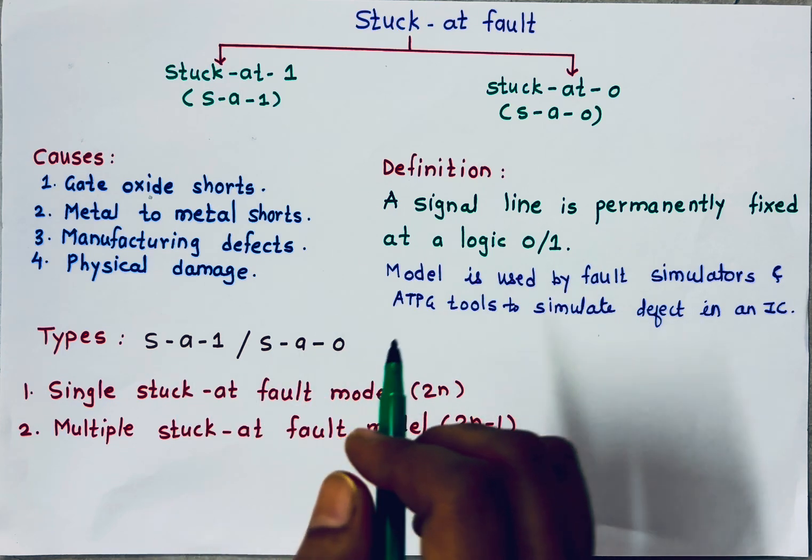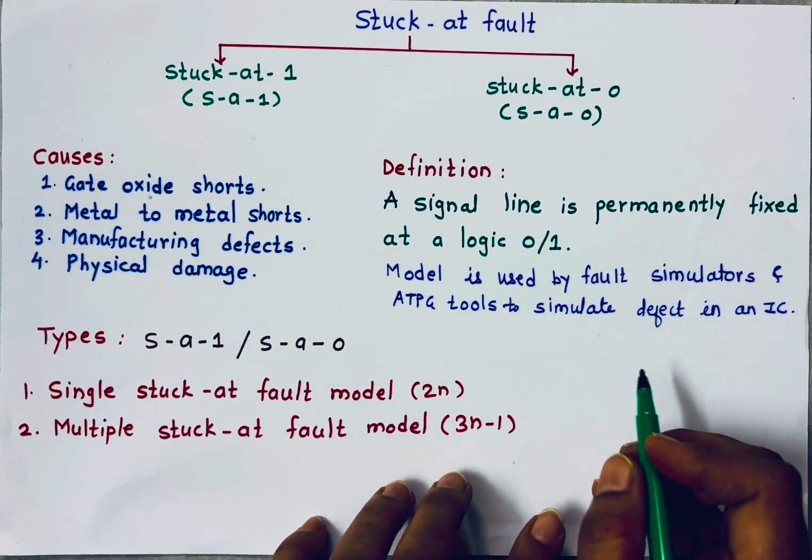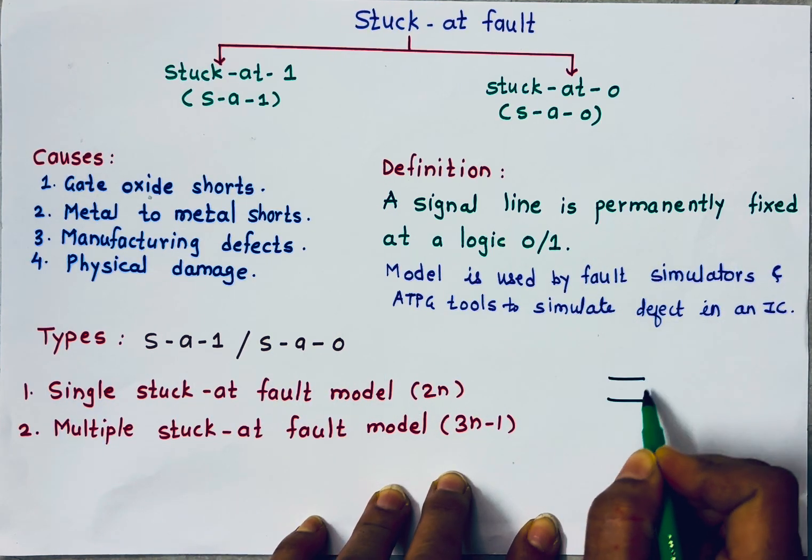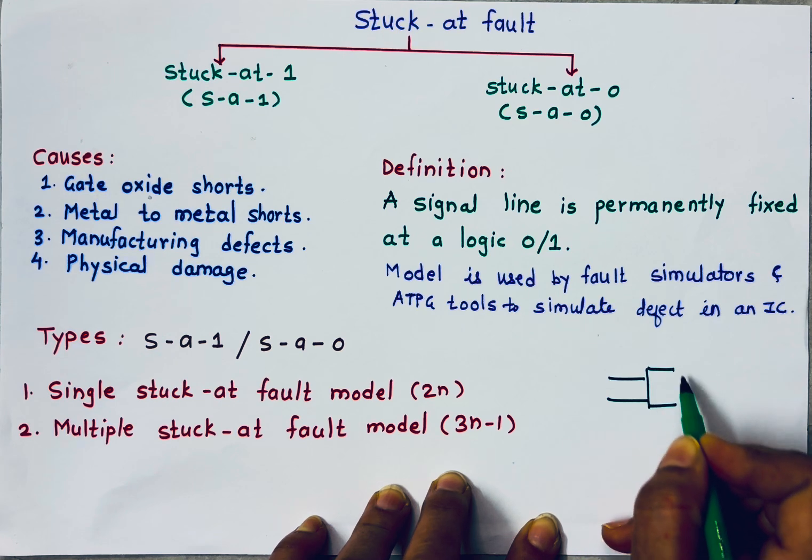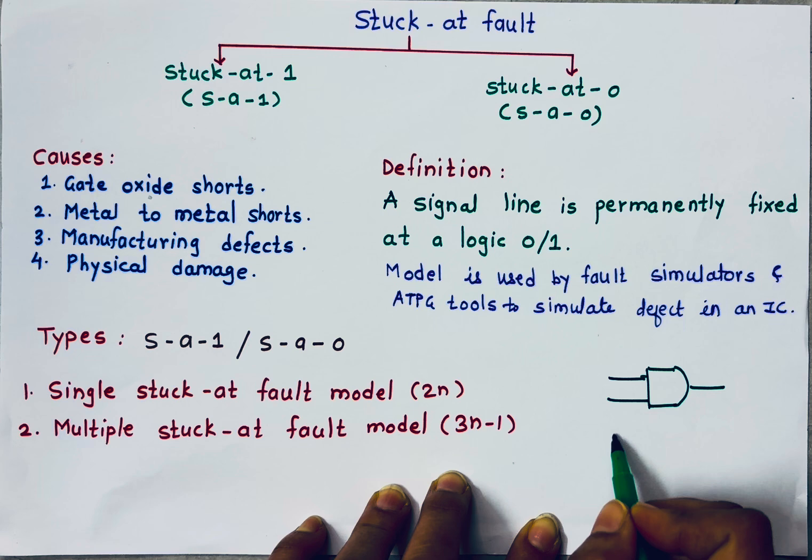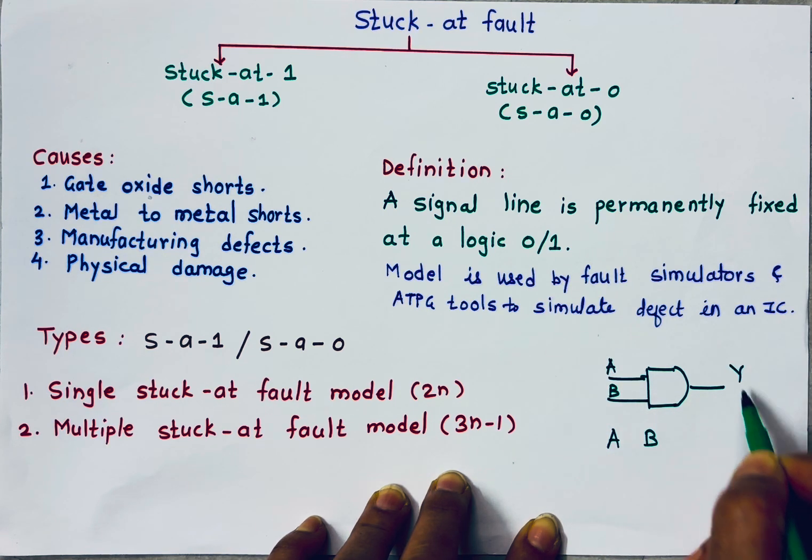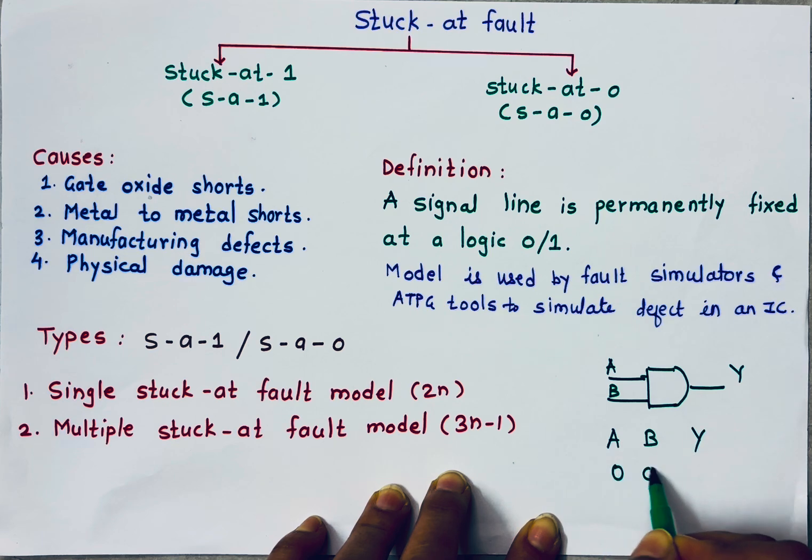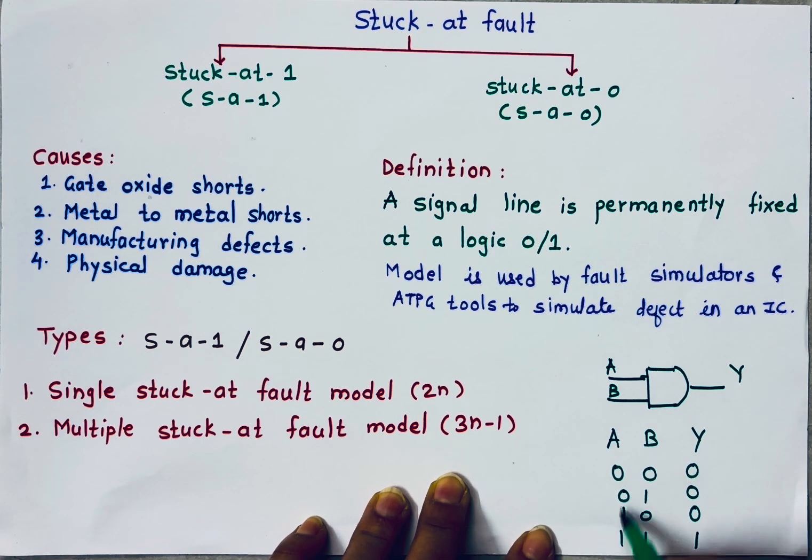While testing, what we can do if I have one circuit? Let's take an example of simple 2 input AND gate. How I will check it? I will apply input. Suppose input is, this is A, this is B, this is my truth table and this is my output Y. For 0,0 I should get 0, for 0,1 I should get 0, for 1,0 I should get 0 and for 1,1 only I should get 1. These are my correct inputs and outputs.